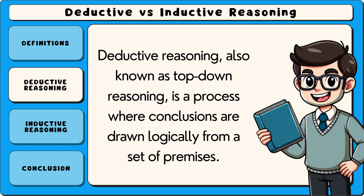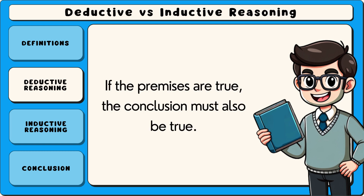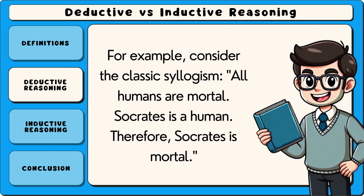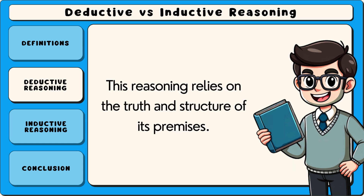Deductive reasoning, also known as top-down reasoning, is a process where conclusions are drawn logically from a set of premises. If the premises are true, the conclusion must also be true. For example, consider the classic syllogism: All humans are mortal. Socrates is a human. Therefore, Socrates is mortal. This reasoning relies on the truth and structure of its premises.